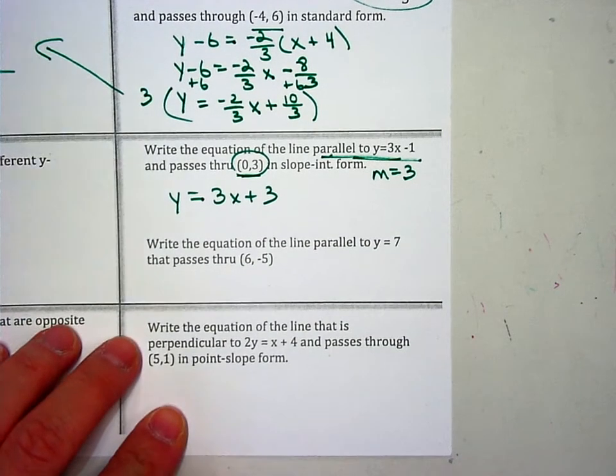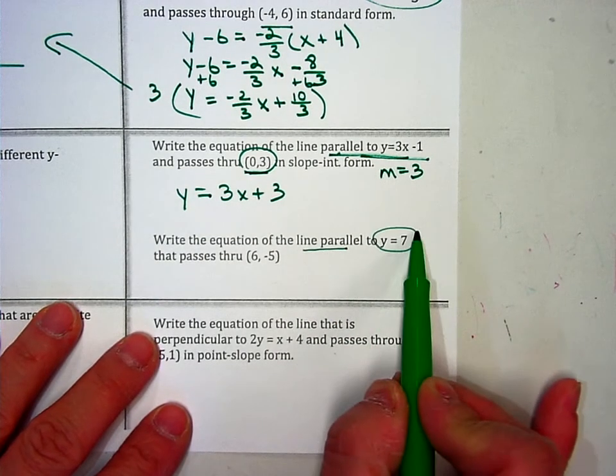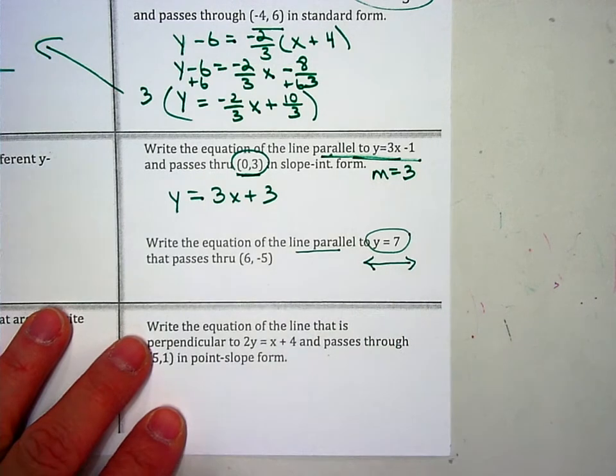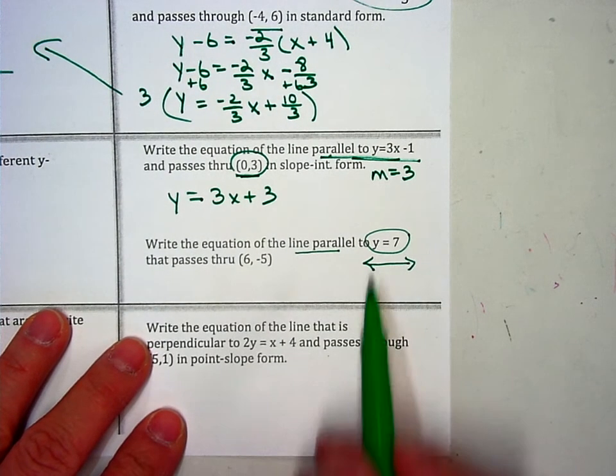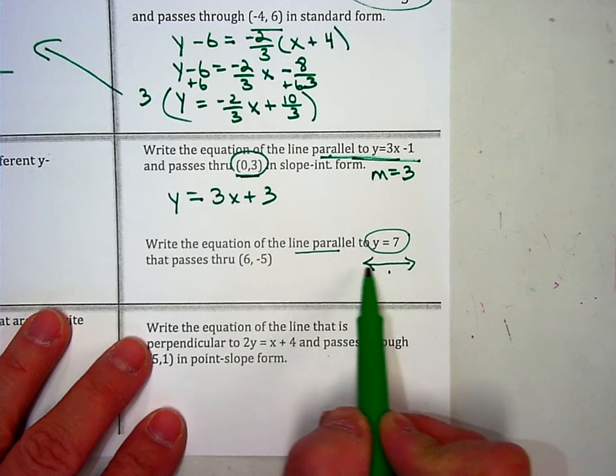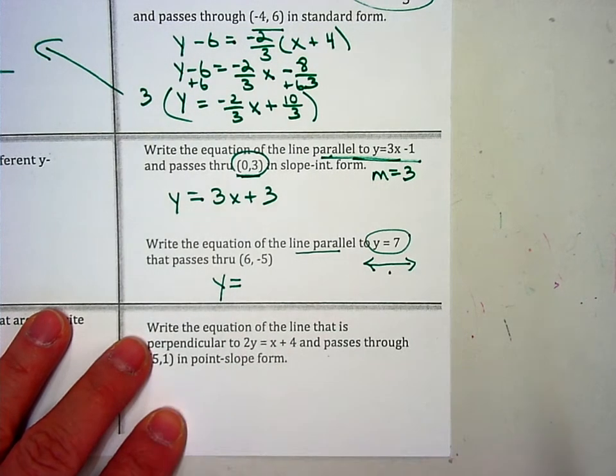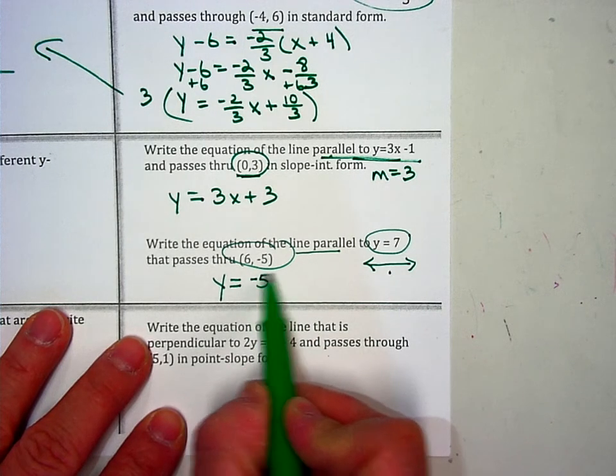This is slope-intercept form. The next one says, write the equation of a line parallel to y equals 7. Now, y equals 7 is a horizontal line that goes straight across, so you have to know that. So the only other type of line that's parallel to a horizontal line is another horizontal line. So you're going to write the equation y equals, but this time, this is the point I want, so my y is negative 5.